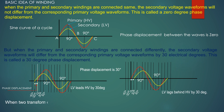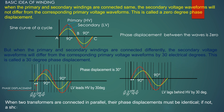When two transformers are connected in parallel, their phase displacement must be identical. If not, a short circuit will occur when the transformers are energized.